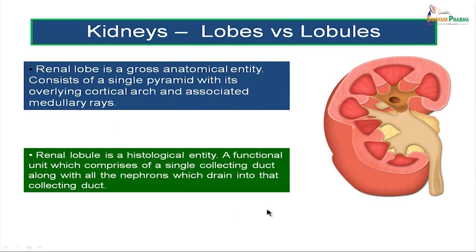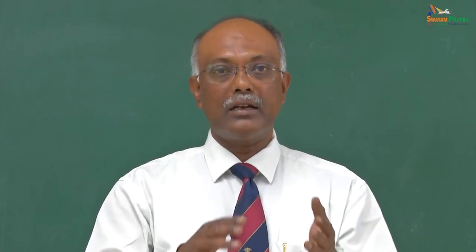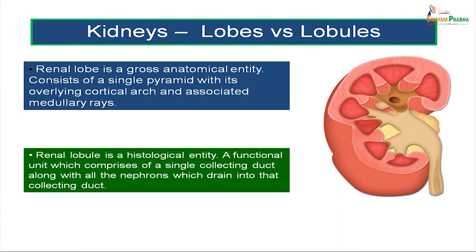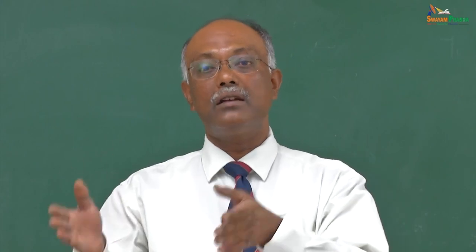There are two important entities: a renal lobe and a renal lobule. The renal lobe is a gross anatomical entity — it consists of a single pyramid with its associated overlying cortical arch and associated medullary rays. A renal lobule is a histological entity — it is a functional unit comprising a single collecting duct along with all the nephrons which drain into that single collecting duct.